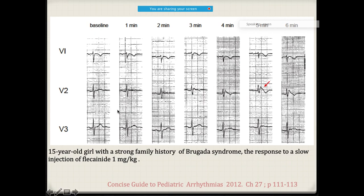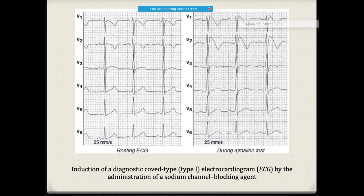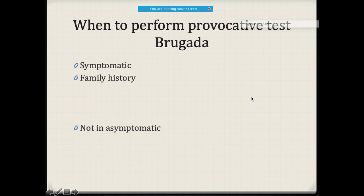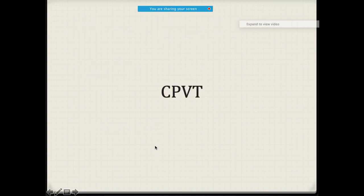On ECG, once IV flecainide infusion was started, Brugada syndrome became more and more evident over time. Similarly, comparing the resting ECG versus ECG during Ajmaline testing clearly shows the unmasking. The provocation test should be performed when a patient is symptomatic or has a family history of sudden cardiac death.